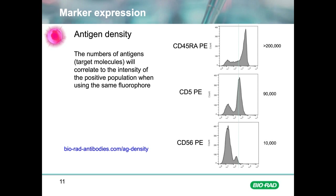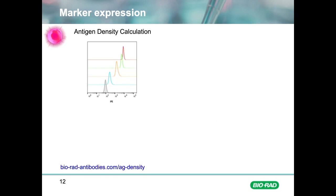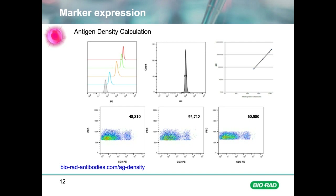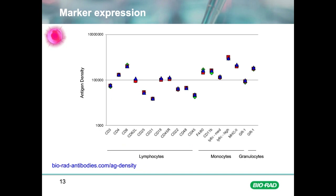To measure antigen density, the easiest method uses beads that have a specific antibody binding capacity via the Fc portion. Bead populations with increasing binding capacity show mean fluorescence intensity directly correlating with binding capacity, and a standard curve can be obtained. This standard curve can then be used to obtain values for cells stained with specific markers, such as CD3 on murine spleen. Using this method, the antigen density of many cell markers on T, B, and myeloid cells can be determined. More detailed information can be found at bioradantibodies.com.